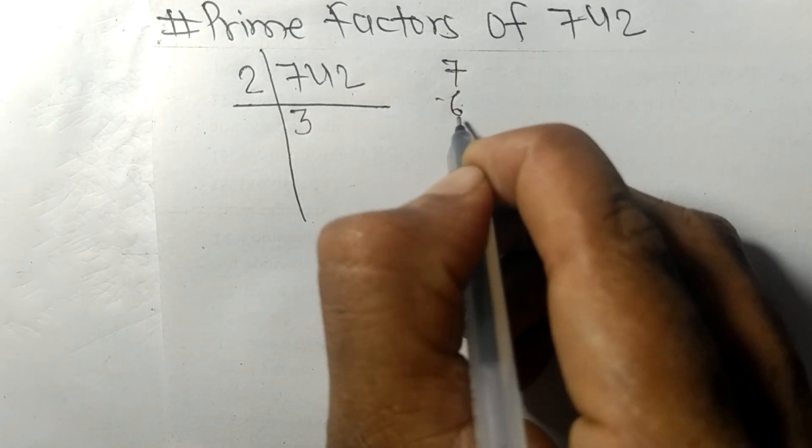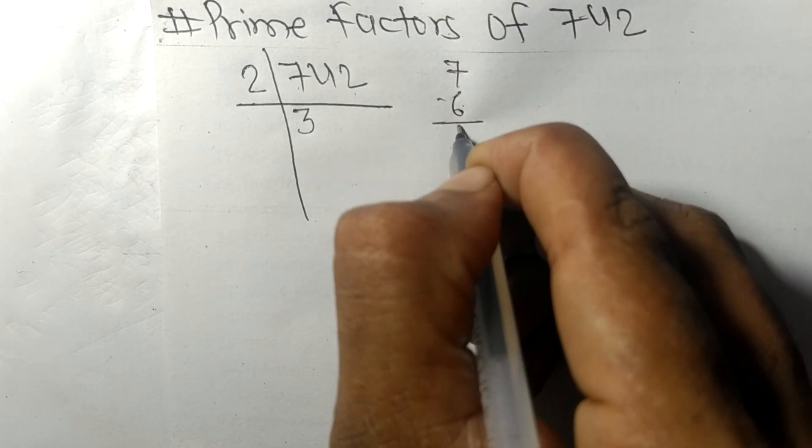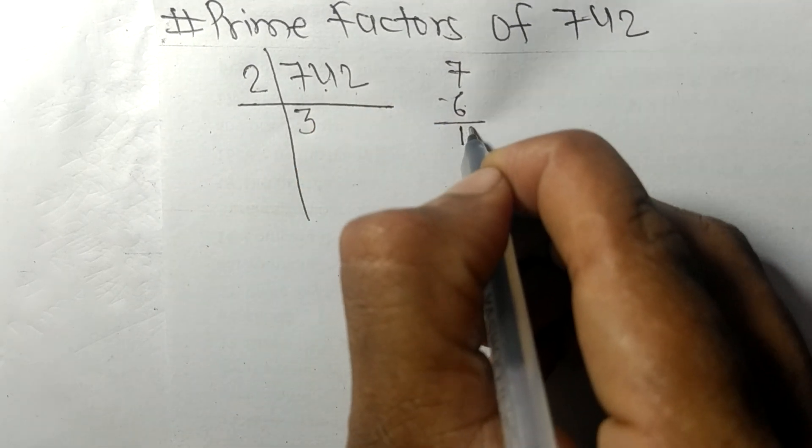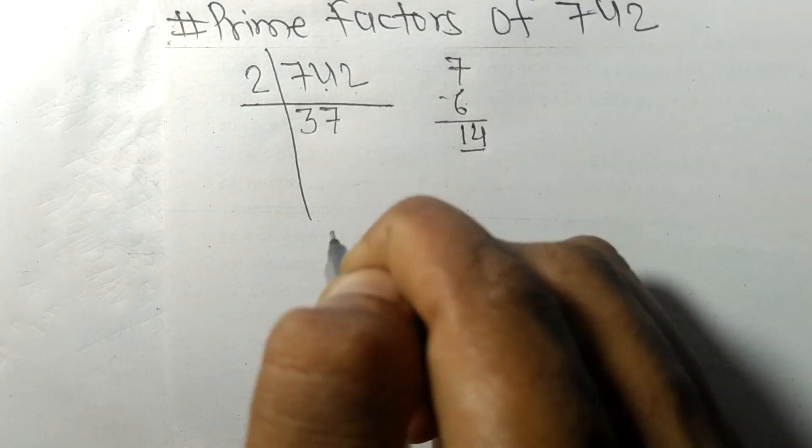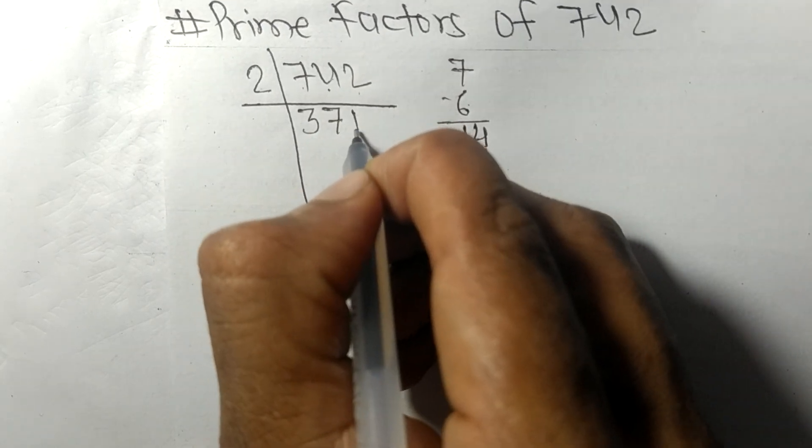means 6. On subtracting we get 1, and this 4. 14: 2 times 7 means 14, and 2 times 1 means 2.